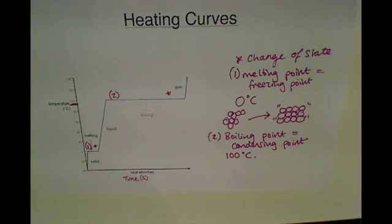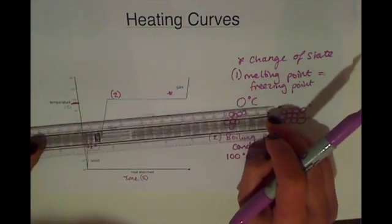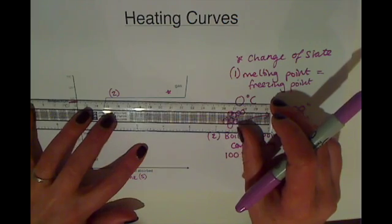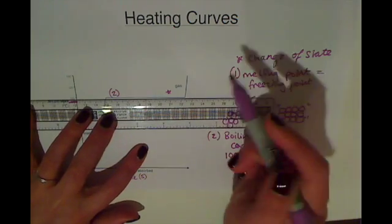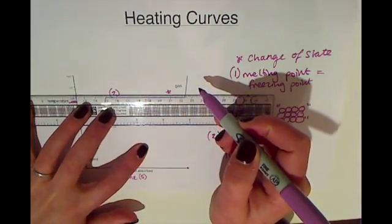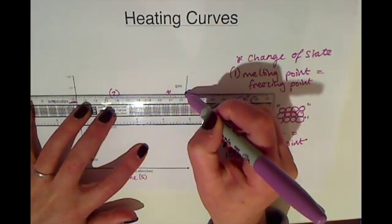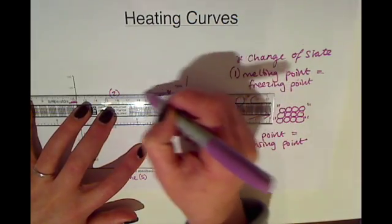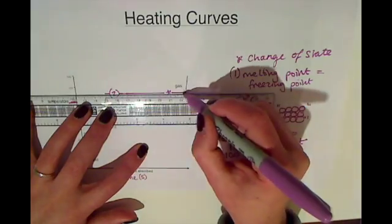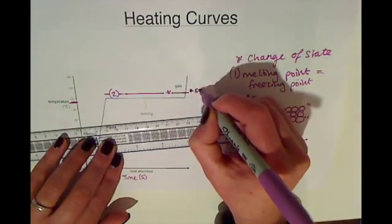Now pure water would have the change of state points at 0 and 100 degrees C but if we were to add salt to the water it will do a couple of things. Now salt will raise the boiling point of water. So if you added salt to water your change of state would not be at 100 degrees C but it will be a little higher depending on how much salt you add. So your horizontal line on your graph would be higher if that was salt water.